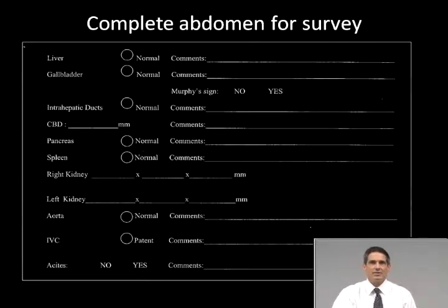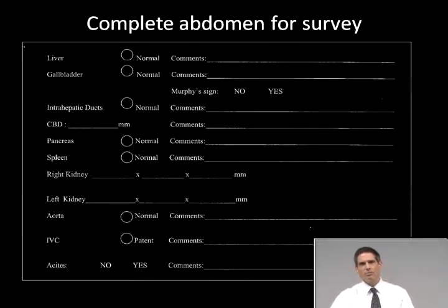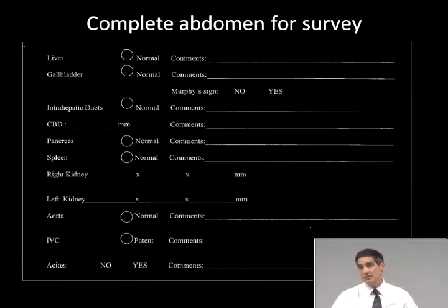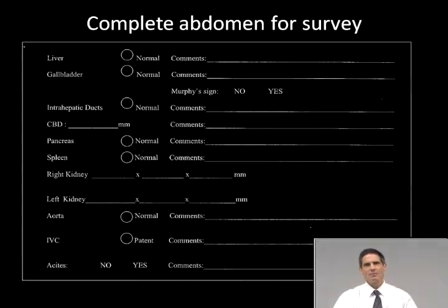As an alternative to a right upper quadrant ultrasound, another option is a complete ultrasound of the abdomen, which adds the contralateral left kidney, spleen, and aorta. This study surveys the entire abdomen, but it's really a second-tier study compared to abdominal CT for most diseases, even a CT done without IV contrast. However, it can be done as a portable exam, which isn't possible with CT. In general this isn't really a first-line study, but I'm including it here for completeness.